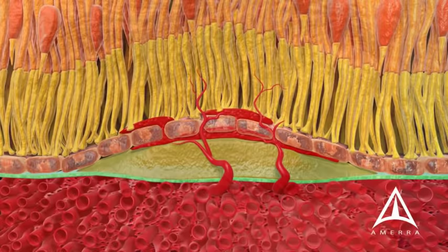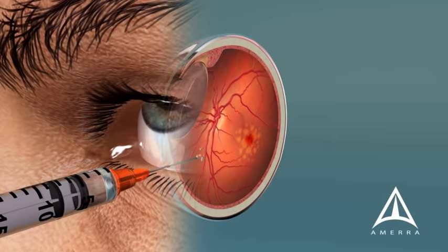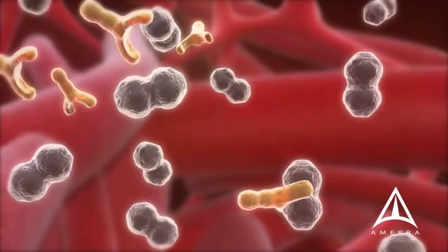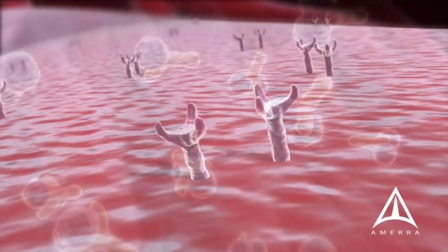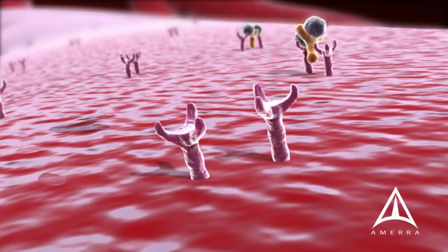The main treatment for wet macular degeneration is an injection of medication into the eye. This medication is delivered close to the retina after freezing and cleaning the eye, and most patients experience only minimal discomfort. These medications work by binding to the VEGF that is released, much like a sponge. As a result, the VEGF cannot bind to its receptors, and these injections slow or stop the growth of abnormal vessels.